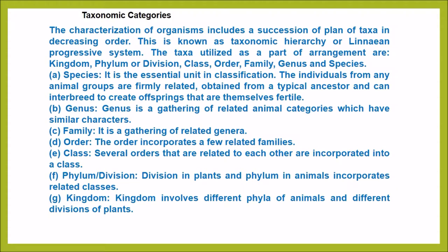Taxonomic categorization: the characterization of organisms includes a succession of a plan of taxa in increasing or decreasing order. This is known as taxonomic hierarchy, also called the Linnaean hierarchical system. The taxa utilized in arrangements are kingdom, phylum or division, class, order, family, genus, and species. Species is the essential unit in classification.